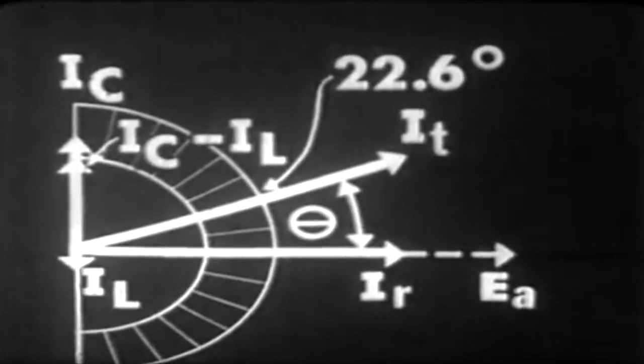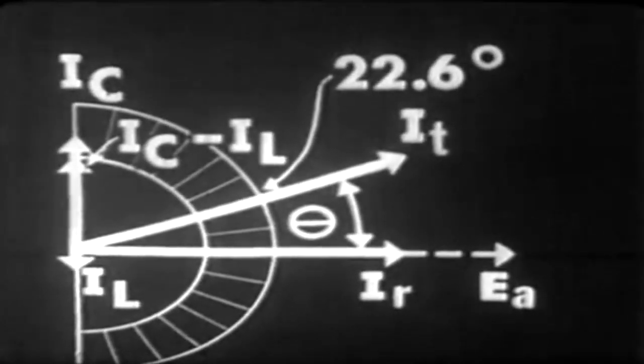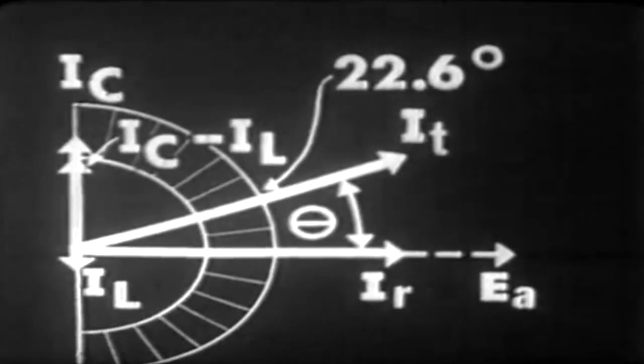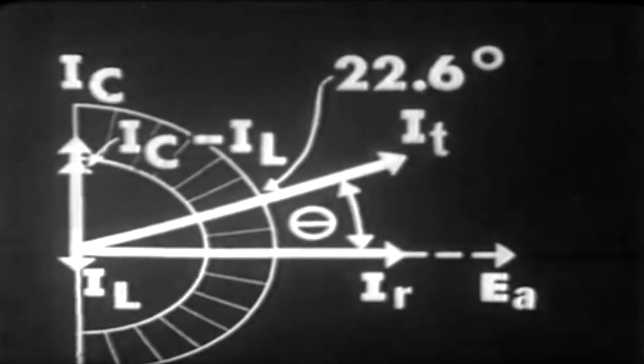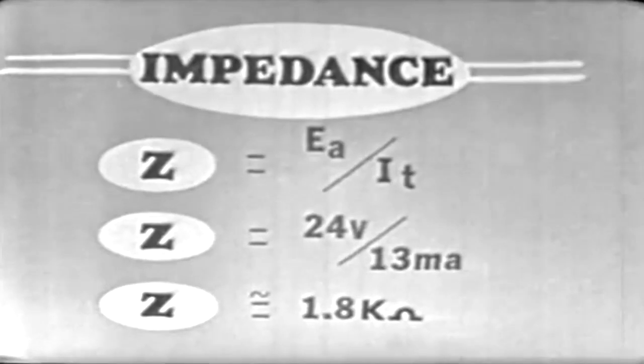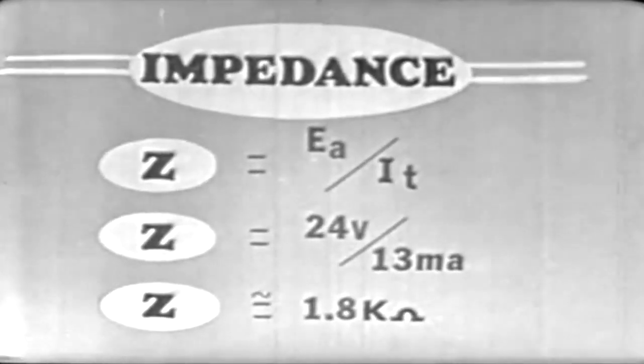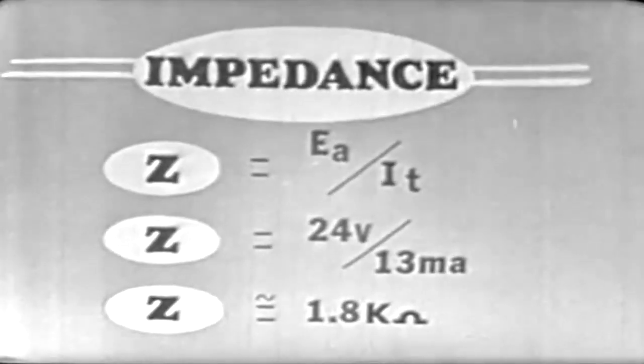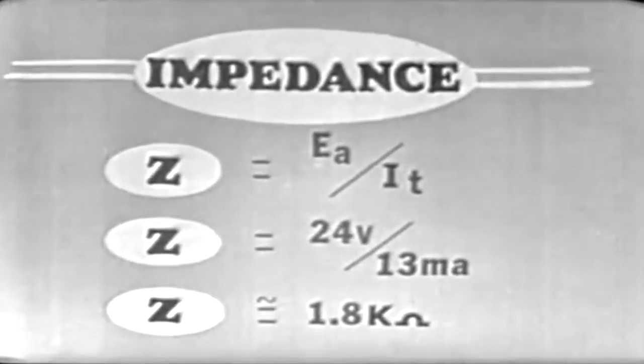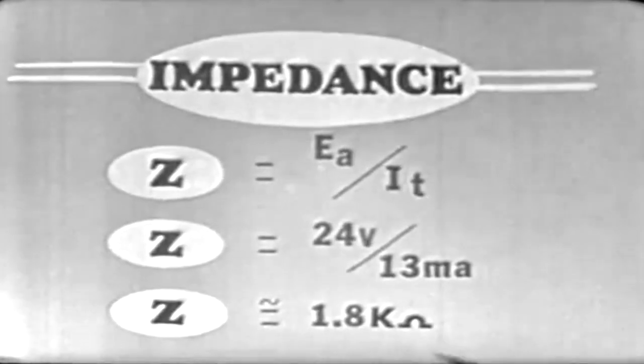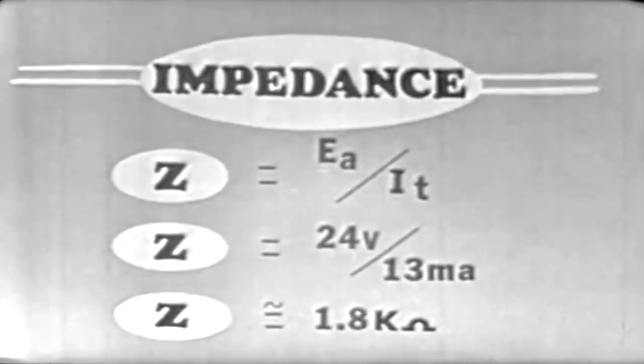Now that we have calculated graphically our total current to be 13 milliamperes and the phase angle to be 22.6 degrees, let's go one step further and find the impedance of our circuit. Once again, we can use Ohm's law. Substituting into the formula, note that the impedance is equal to approximately 1.8 k Ohms.